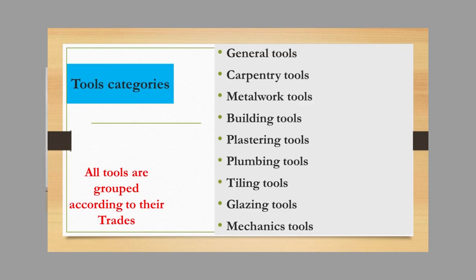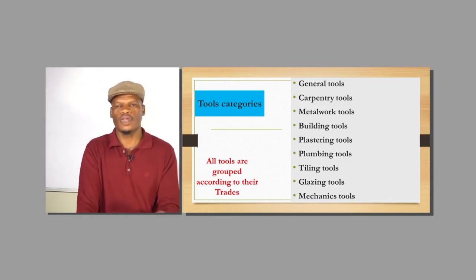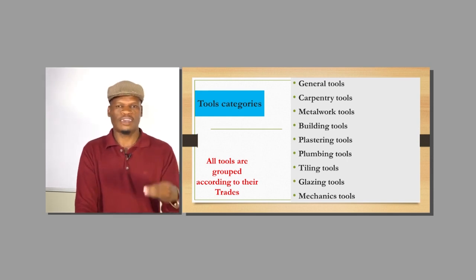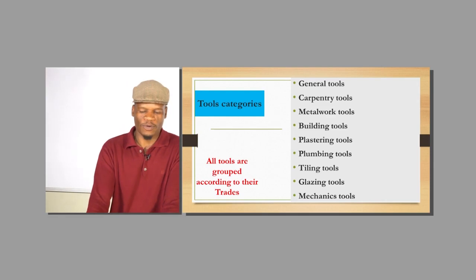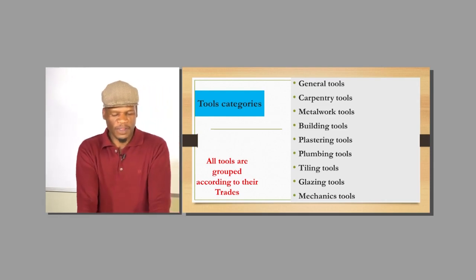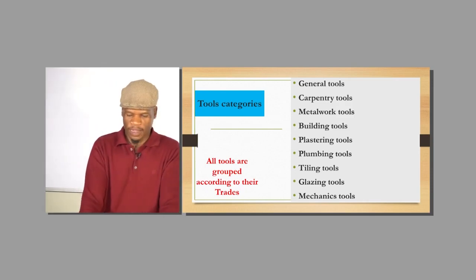According to this outcome, you must be able to cluster all the tools you know into different trades. There are eight trades given in your syllabus, plus a ninth category which is the general tools. You can be a carpenter, metal worker, builder, plasterer, plumber, tiler, glazier, or mechanic — you must know exactly which tools you need for your specific trade.